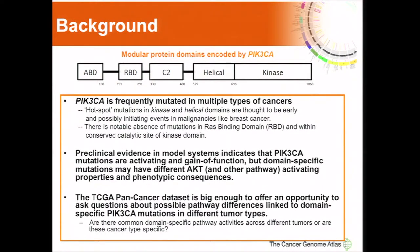Modular domains of this PIK3CA gene are shown here — there are five of them. It's frequently mutated in multiple types of cancers, with hot spot mutations in both the kinase and helical domains. These are thought to be early and possibly initiating events in malignancies like breast cancer. There's a notable absence of mutations in the RAS binding domain and within the core catalytic site of the kinase domain. Preclinical evidence indicates that PIK3CA mutations are activating and gain-of-function, but domain-specific mutations may have different downstream effects, in particular phosphorylation and activation of AKT and other downstream pathways including mTOR, and also phenotypic consequences.